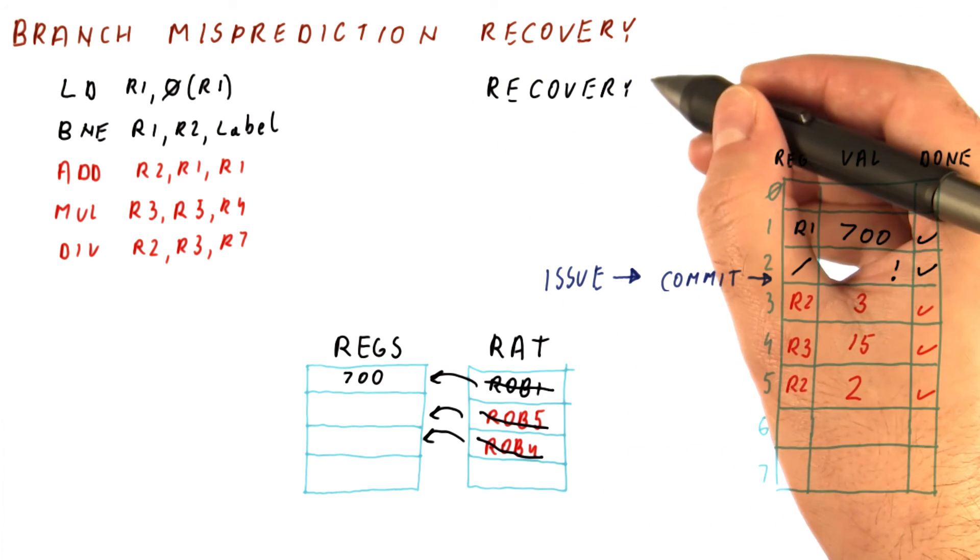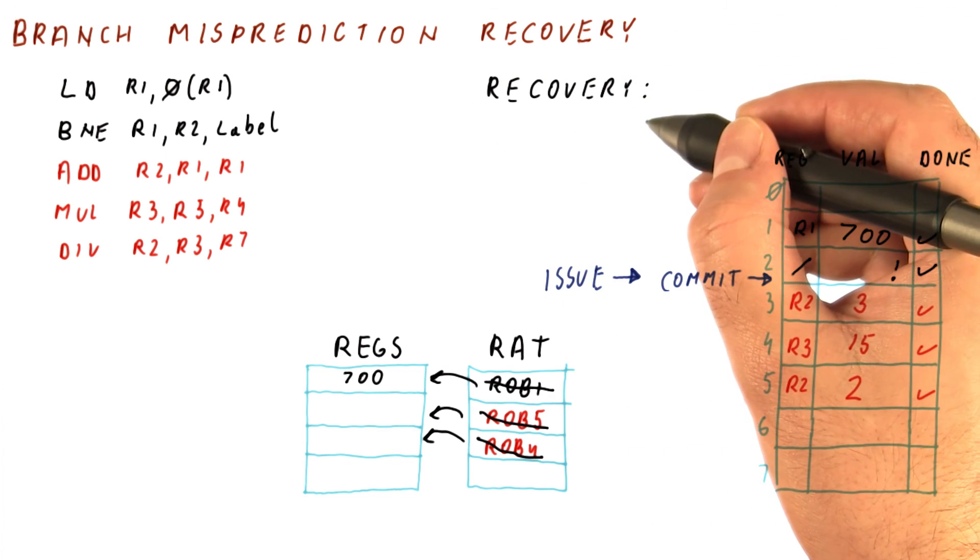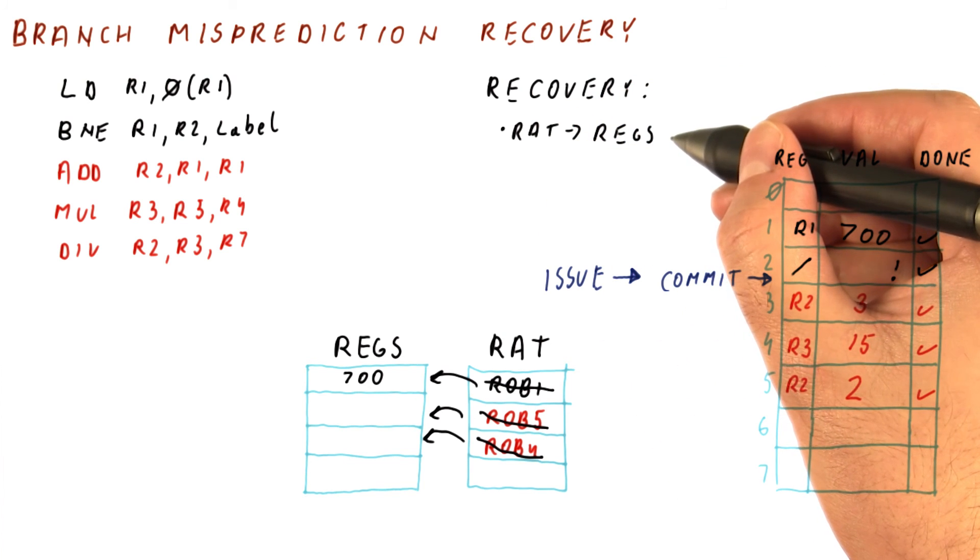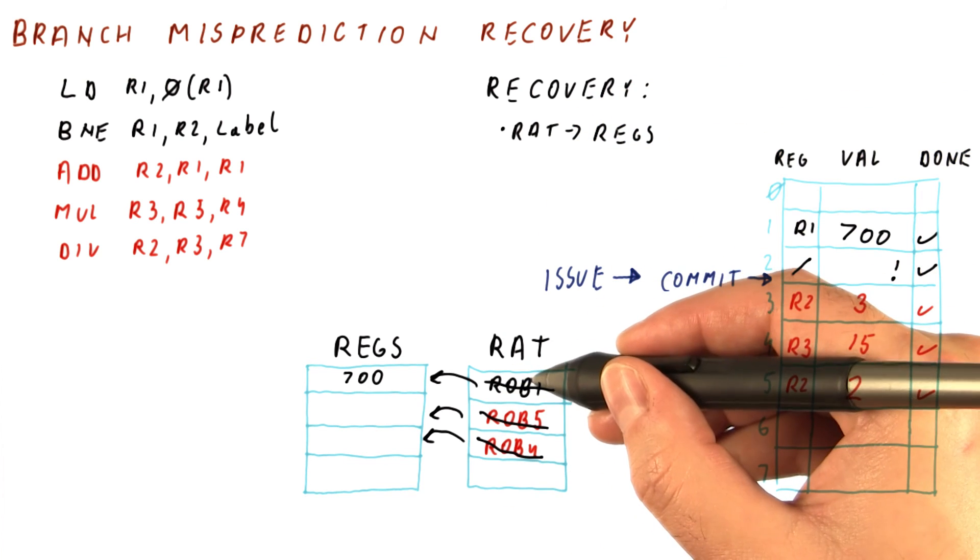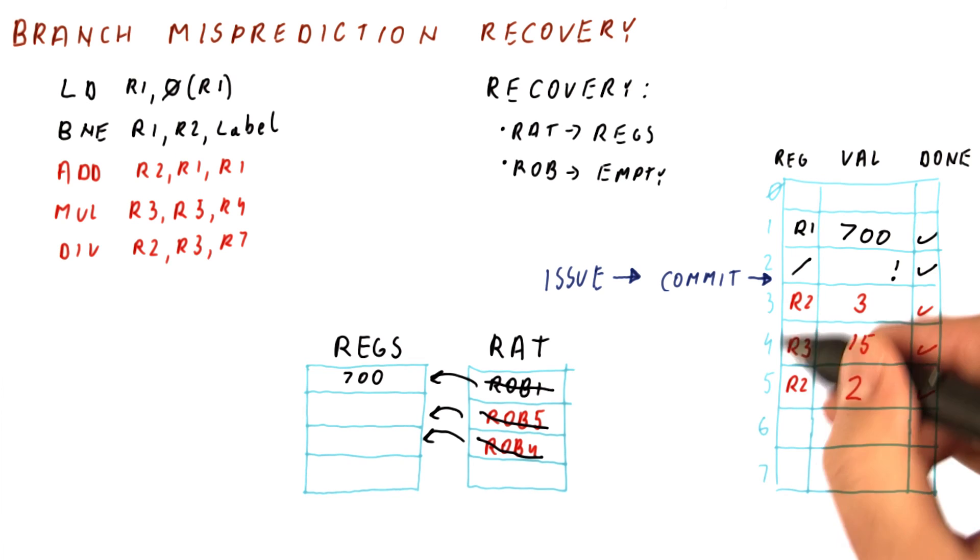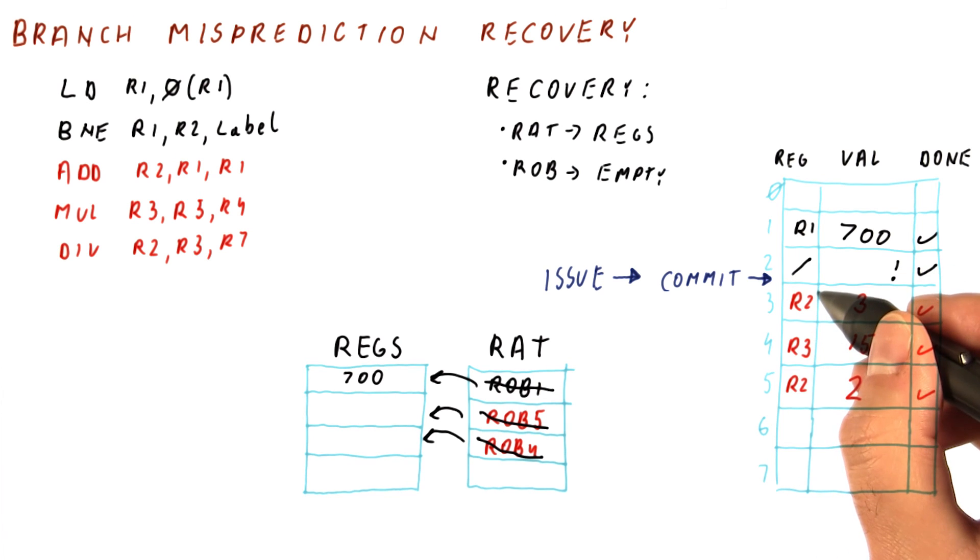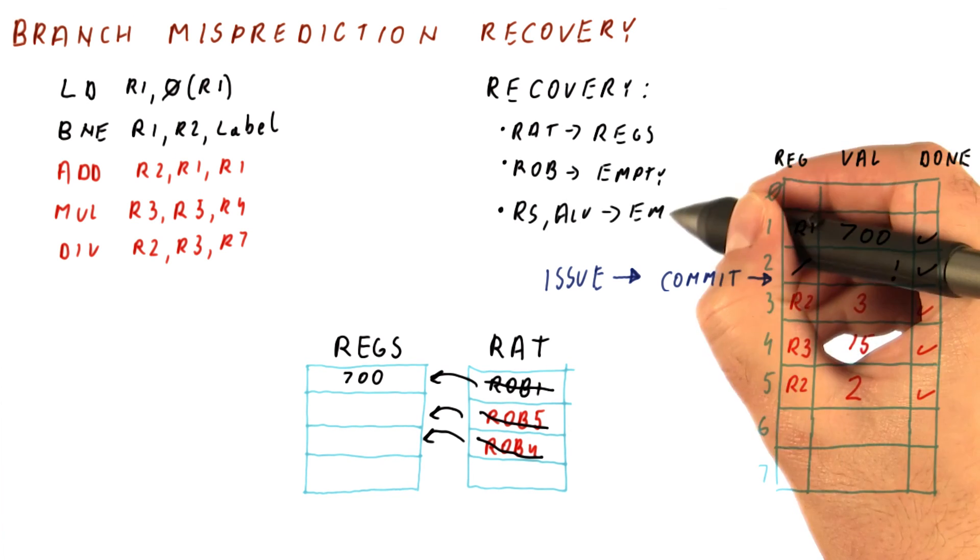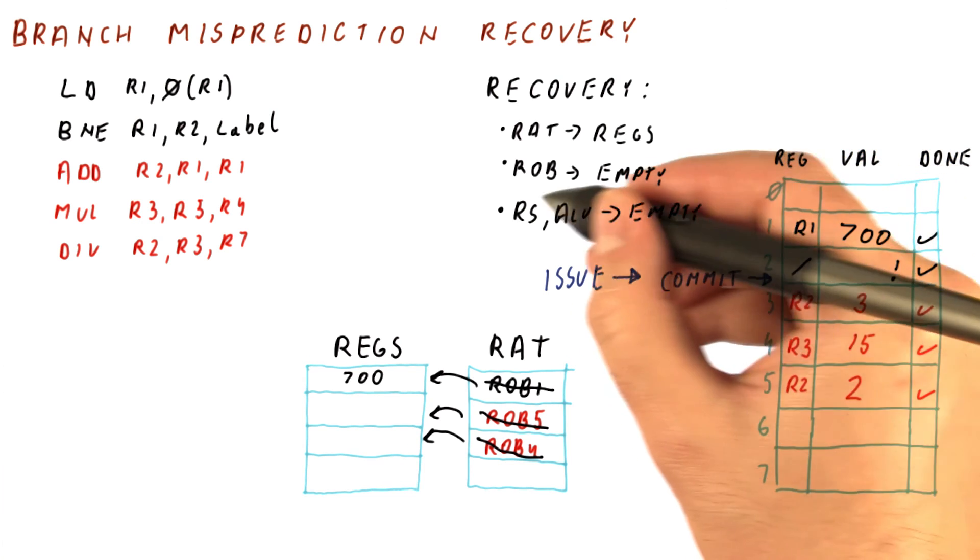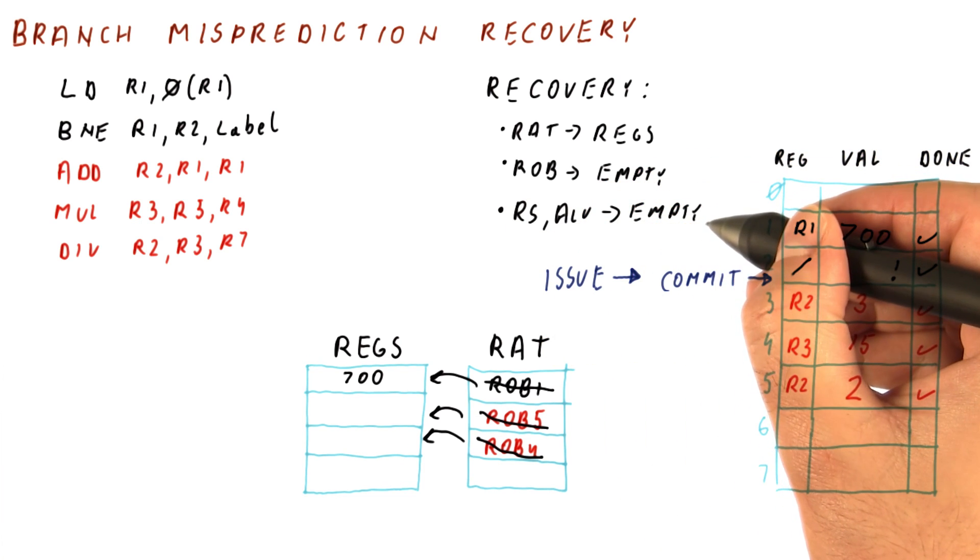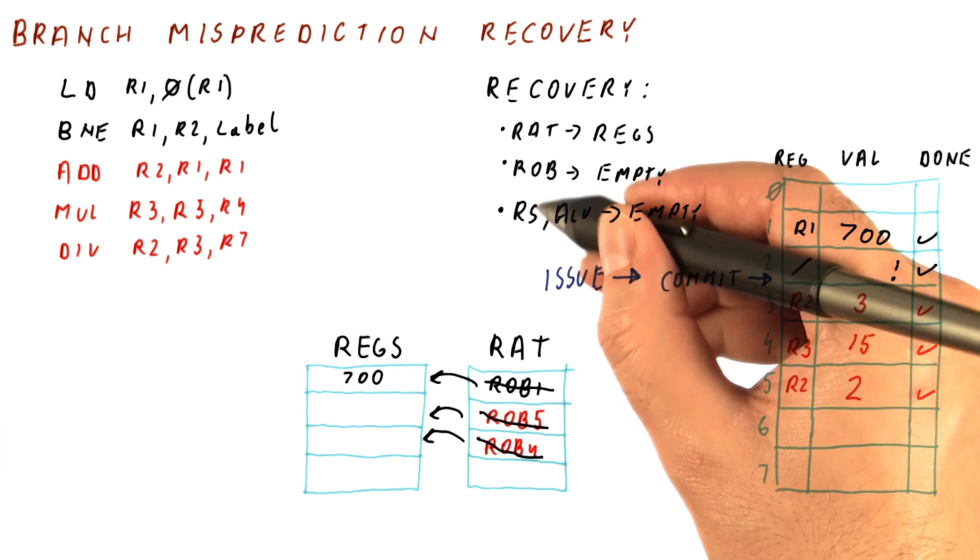Overall, the recovery with the ROB-based processor consists of making the RAT entries point to their corresponding registers, so we can erase all of the renaming, emptying out whatever is in the ROB after we commit the offending branch instruction, and of course, getting rid of whatever is left over in the reservation stations and the ALUs.